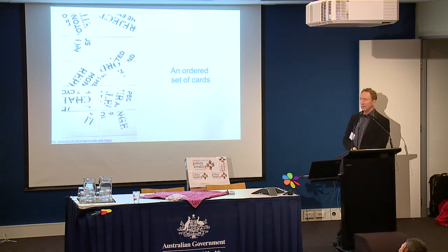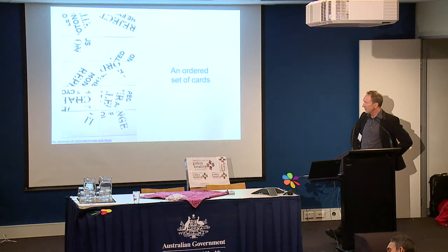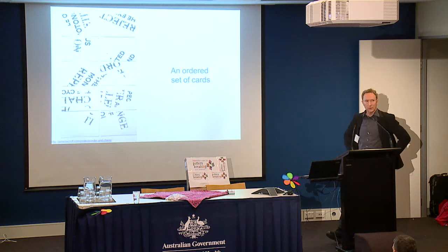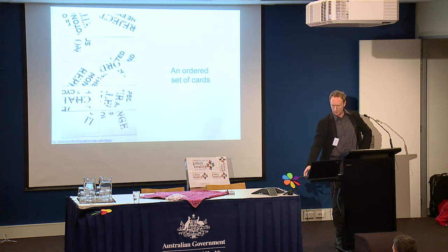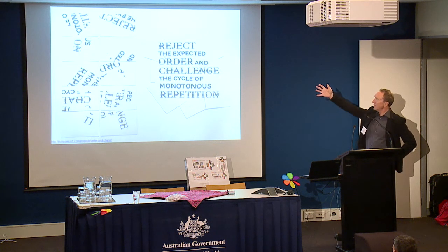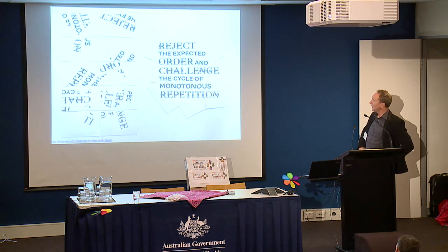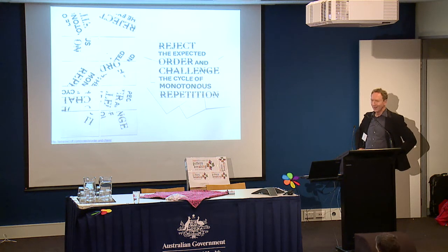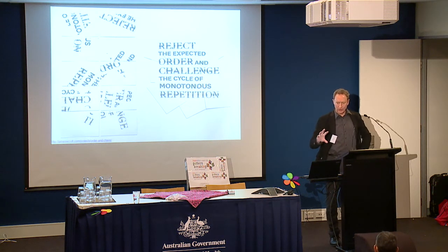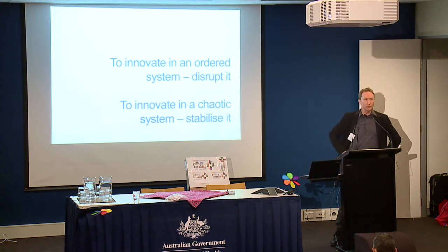One of the problems with order is that sometimes our order can be in the wrong order. As this set of cards illustrates — this is a pretty impressive assignment from a fellow called James Croft who was at Ballarat University or TAFE. On the left-hand side, we have a series of cards arranged in perfect order. But you actually have to arrange them in non-perfect order to get the message, which is: reject the expected order and challenge the cycle of monotonous repetition. It illustrates this point that we might have a highly ordered world but it's perhaps not ordered to be the optimum state. So to innovate in an ordered system, disrupt it.